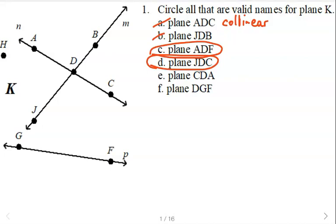CDA — those are collinear, so that is not a valid way to name the plane. So plane K, along with plane ADF, plane JDC, and plane DGF all refer to that specific plane. They must be non-collinear points, which A, C, and F are — all non-collinear.